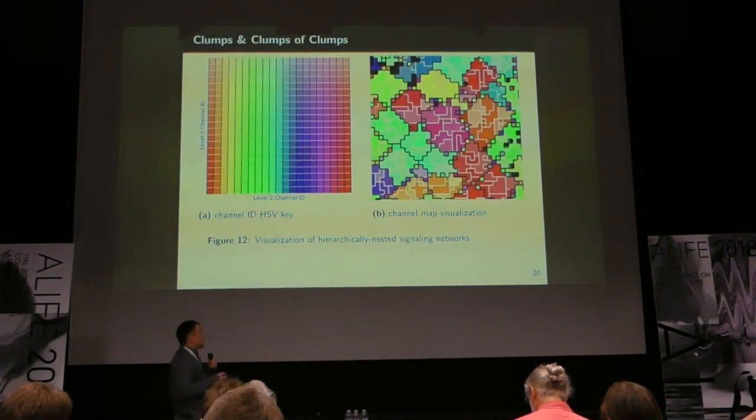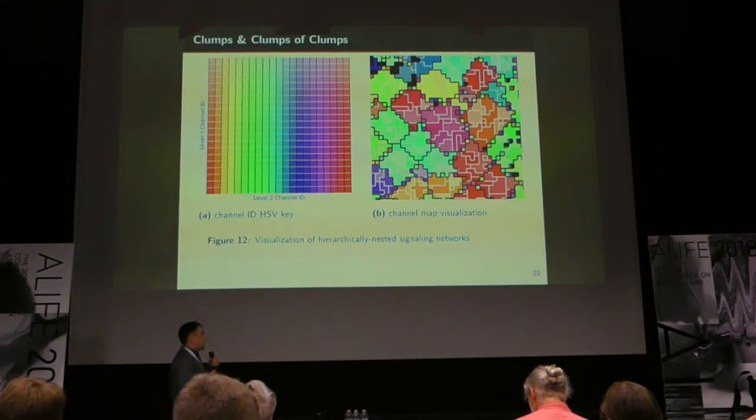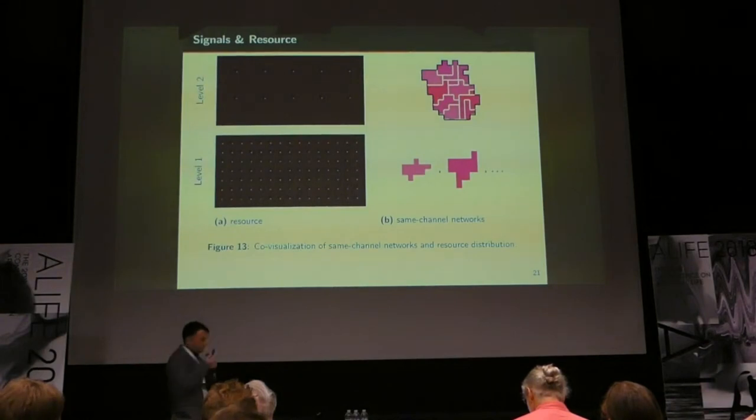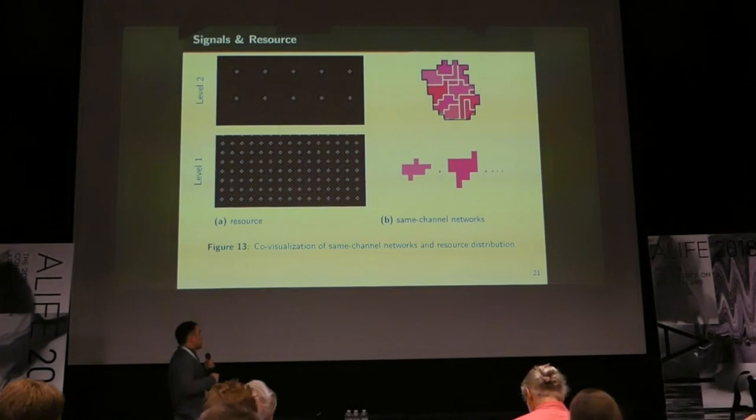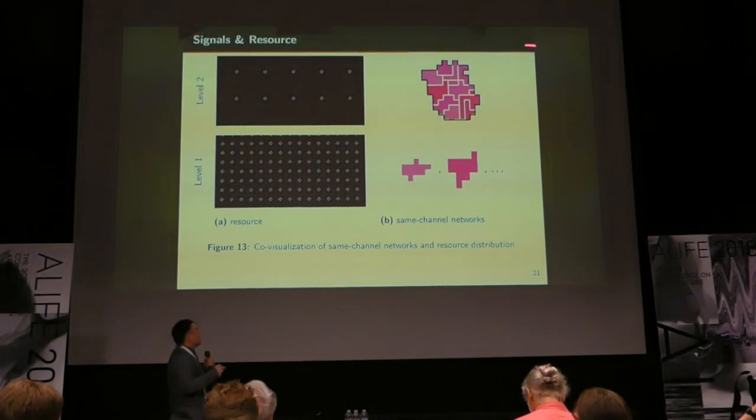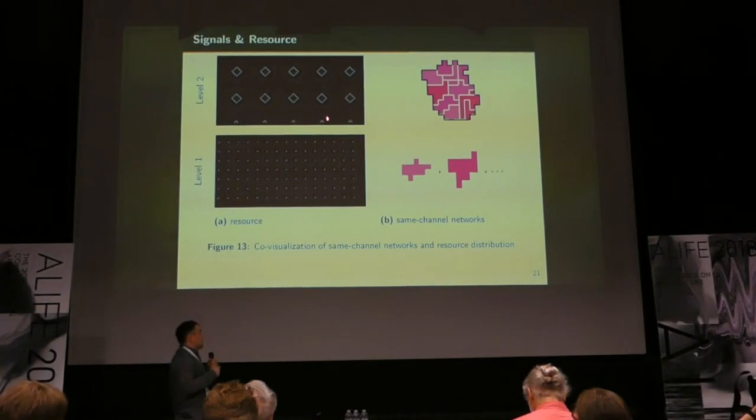And we can put this clump on a single high-level channel next to other clumps that are on other high-level channels. To really drive home what's going on here, we have low-level clumps that are coordinating on this smaller resource collection task. So just these cells are coordinating to do this, and just these cells are coordinating to do that. But the large clump as a whole is coordinating to perform this larger resource collection task.